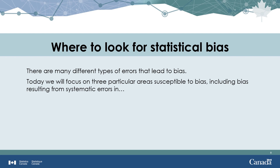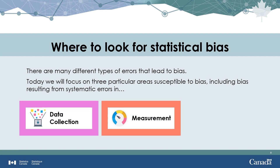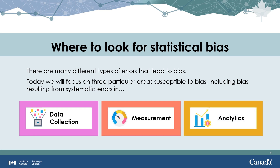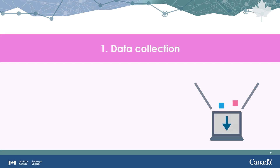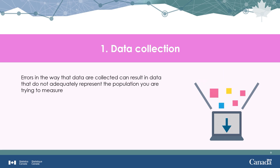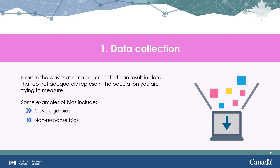Beginning with data collection, bias can be a result of systematic errors in the way the data are collected, resulting in data that do not adequately represent the population you are trying to measure. Some examples of bias include coverage bias, non-response bias, and self-selection bias.